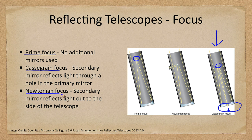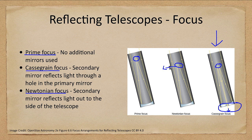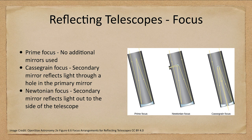Another configuration often used is the Newtonian focus. It bounces off the primary mirror up to a secondary mirror which is angled and sends light off at an angle to be seen. That can be convenient for some telescopes, especially smaller telescopes, to put the eyepiece at a convenient location. However, it can be inconvenient if you're trying to put a heavy instrument there, because you're applying a lot of extra torque to the system. So it really depends on what you want to observe.